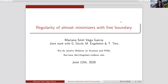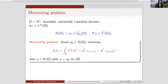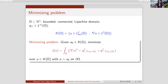Here we have the minimizing problem. We are given a domain omega in R^n which is bounded, connected, and Lipschitz. We have two functions q-plus and q-minus which we assume are in L-infinity. Our class of admissible functions is the set of functions in L1-loc in the domain for which the gradient is in L2. We have a boundary data function u0, and we want to minimize the energy functional J, which includes the gradient squared plus q-plus squared on the set where u is positive, and q-minus squared where u is less than or equal to zero.